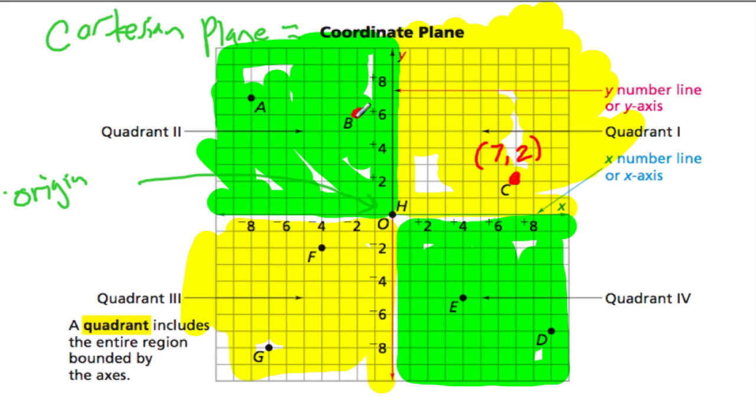We go to here, the second quadrant. We have negative x values and positive y values. So we have negative two to get to B. And then we go up six, so it's negative two, six.